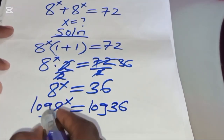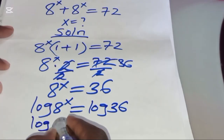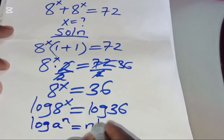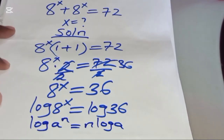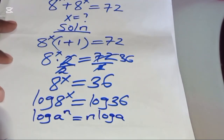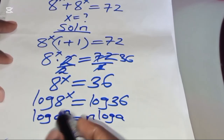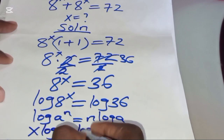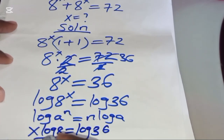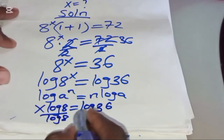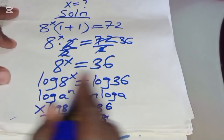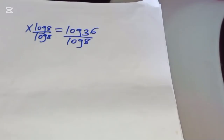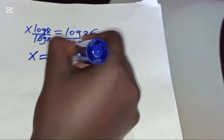Now, log of 8 to the power x is in the form of log a to the power n, which you can express as n times log a. This is the power rule property of logarithms. So log 8 to the power x becomes x times log 8, and this is equal to log 36. We divide both sides by log 8, so that x is equal to log 36 divided by log 8.